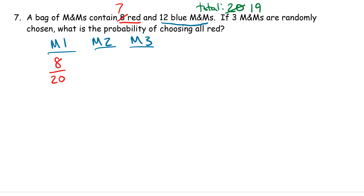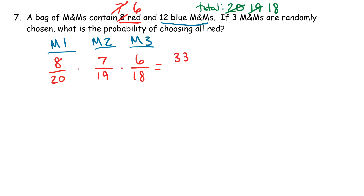For the second M&M, there are 7 red out of 19 total. After drawing that one, there are 6 red ones and 18 total left. So for the last draw it's 6 out of 18. Since we want all three to be red, we multiply these together: 8/20 × 7/19 × 6/18, giving us 336 over 6,840, or approximately 0.05. And that would be our answer.